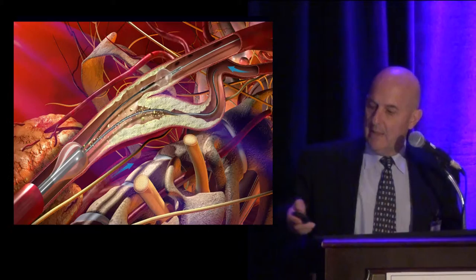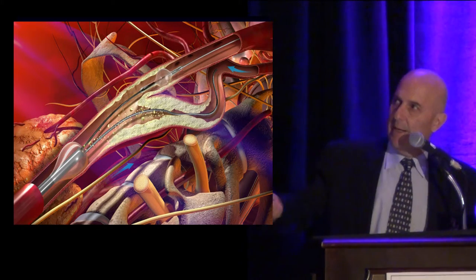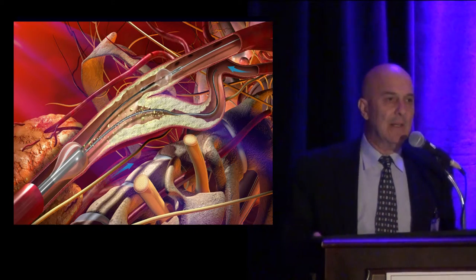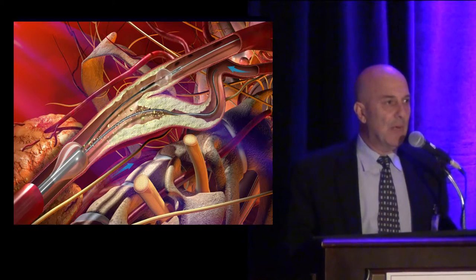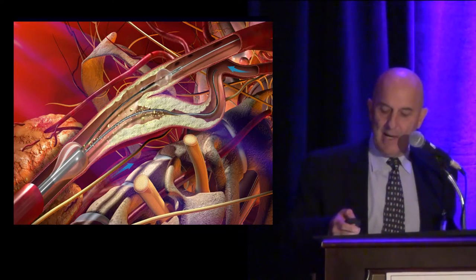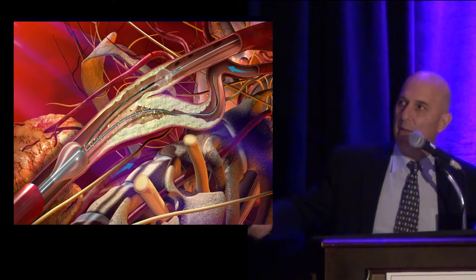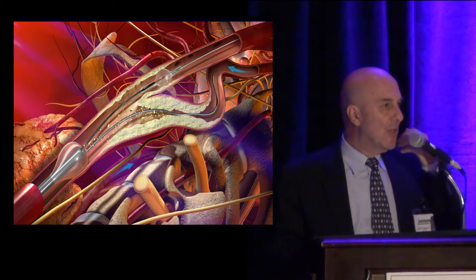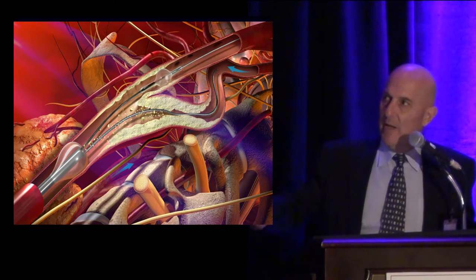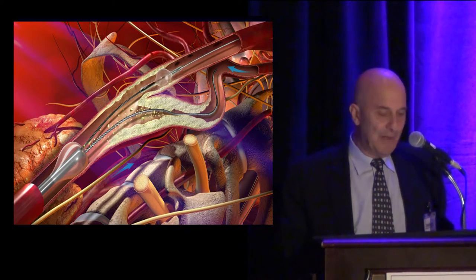The flow reversal system has a guiding catheter placed at the common carotid artery, a balloon on a wire going to the external carotid artery, and the proximal aspect of the sheath is connected through a venous sheath with a filter in between, creating an external arteriovenous fistula. This increases blood flow from the arterial to the venous system, driving blood in a retrograde fashion from the brain through the plaque.